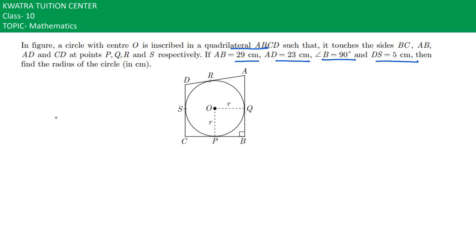Now if we look here, which values do we have given? DS is given as 5, AD is given as a distance which is 23, AB is given as a distance which is 29.